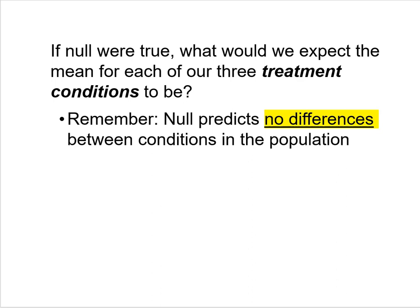Let's take the thought experiment one stage further. If the null hypothesis were true — if the independent variable doesn't have any effect — what would we expect the mean for each treatment condition to be? We drew 21 participants and randomly assigned seven to low, seven to medium, and seven to high incentive. What mean score would we expect each group to show?